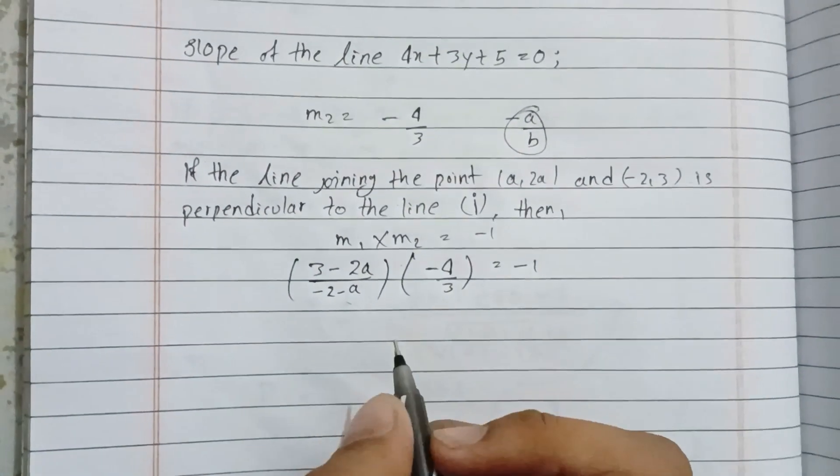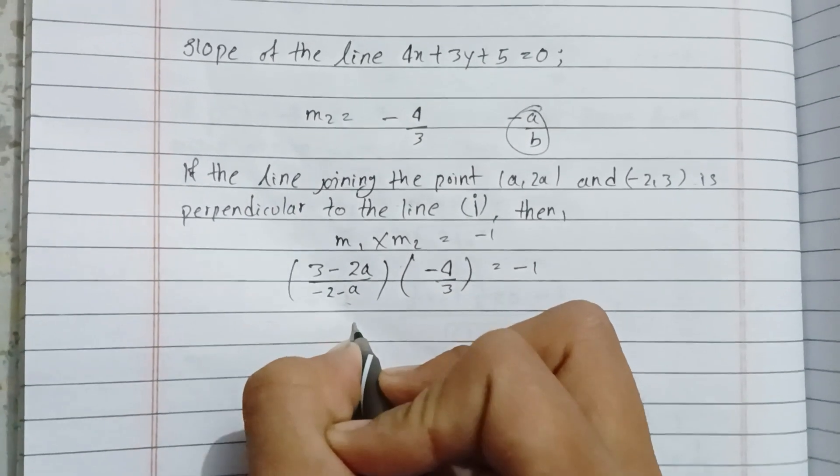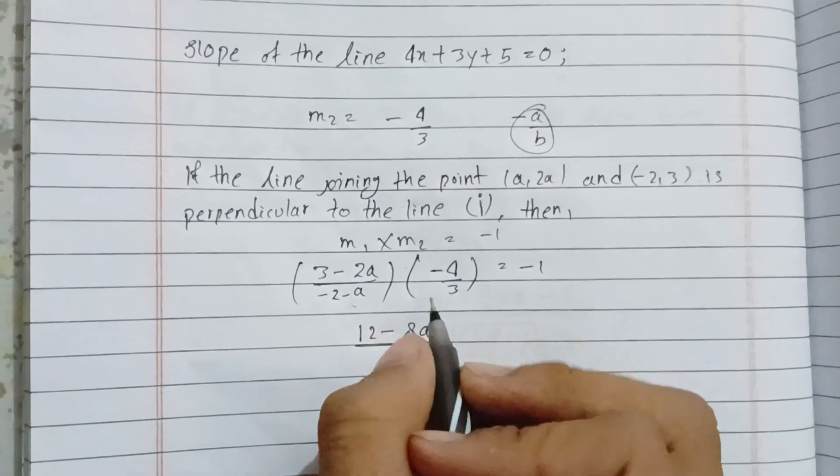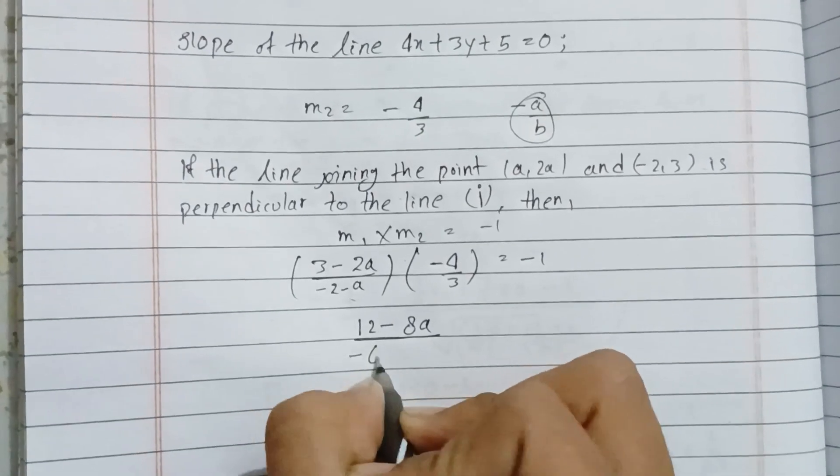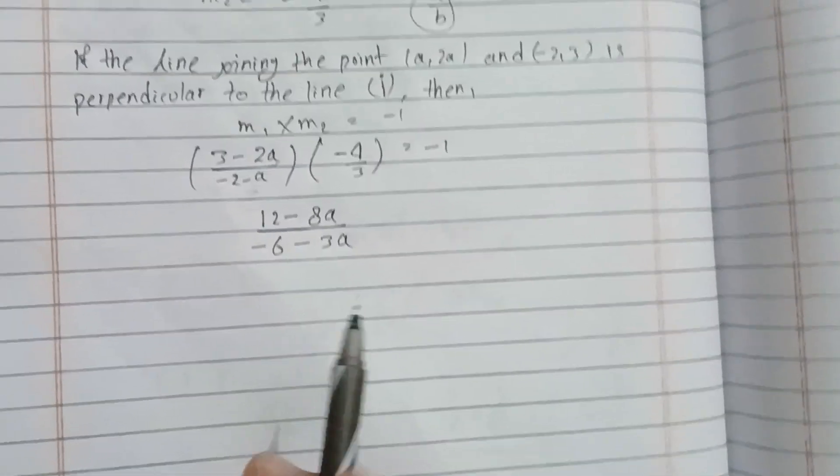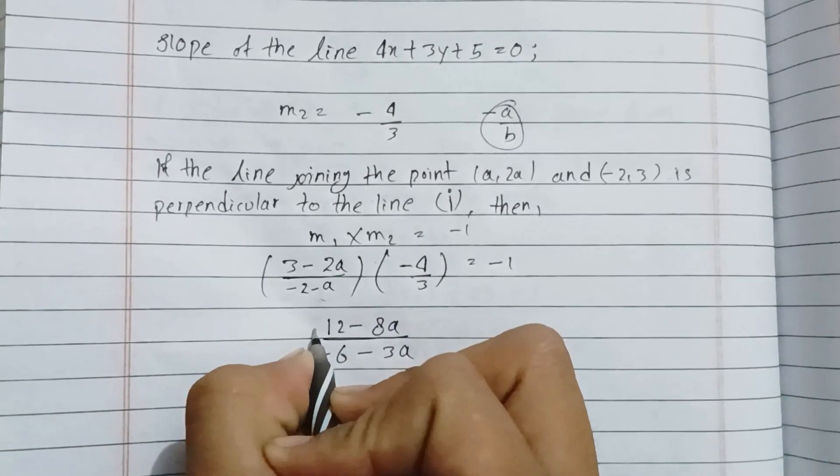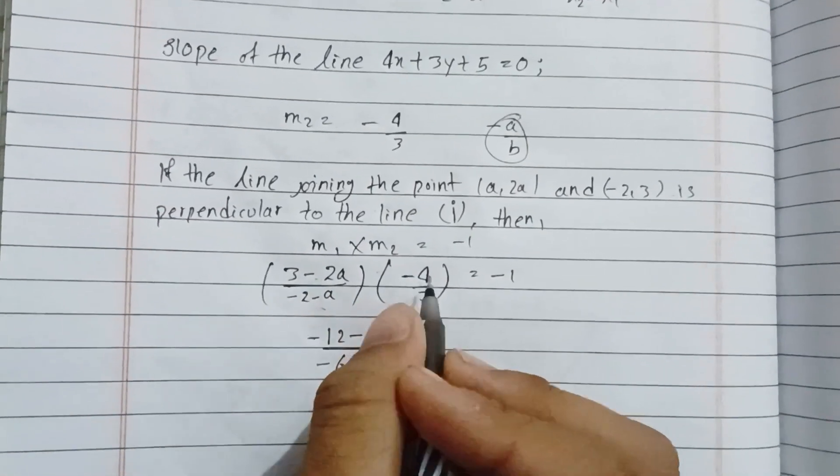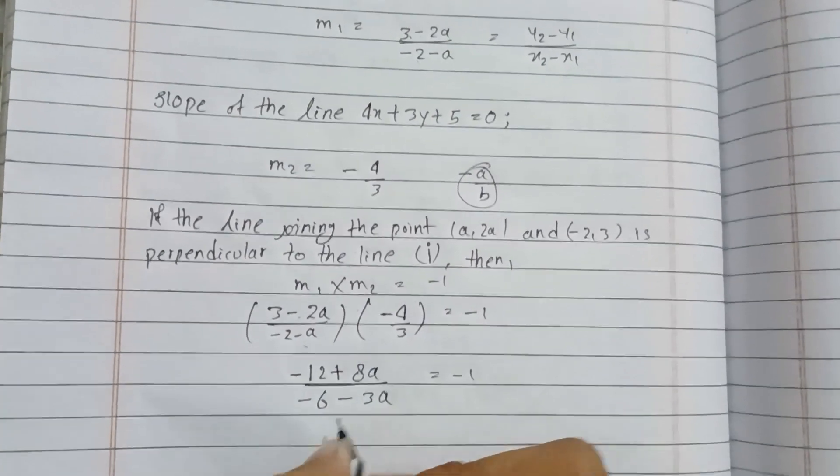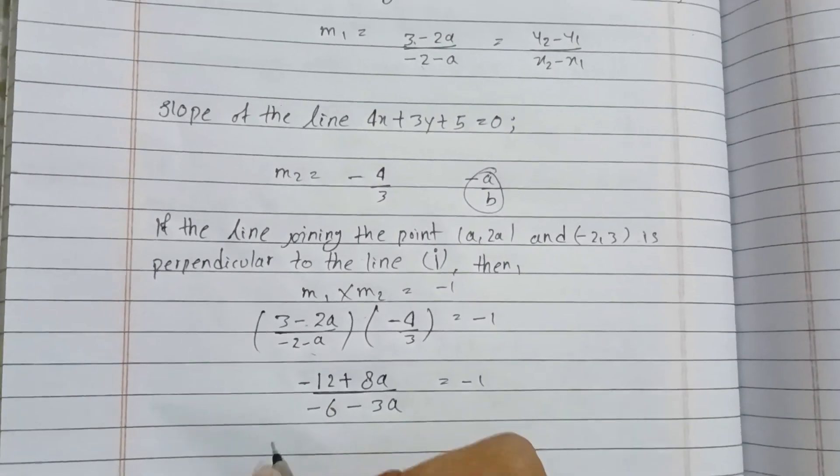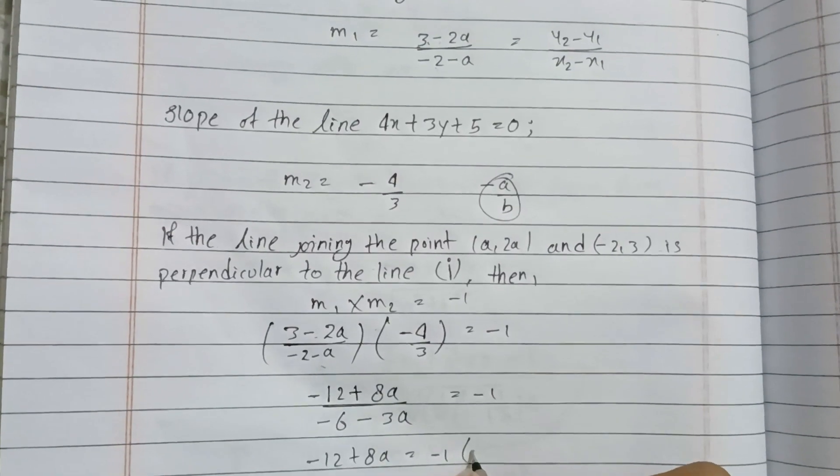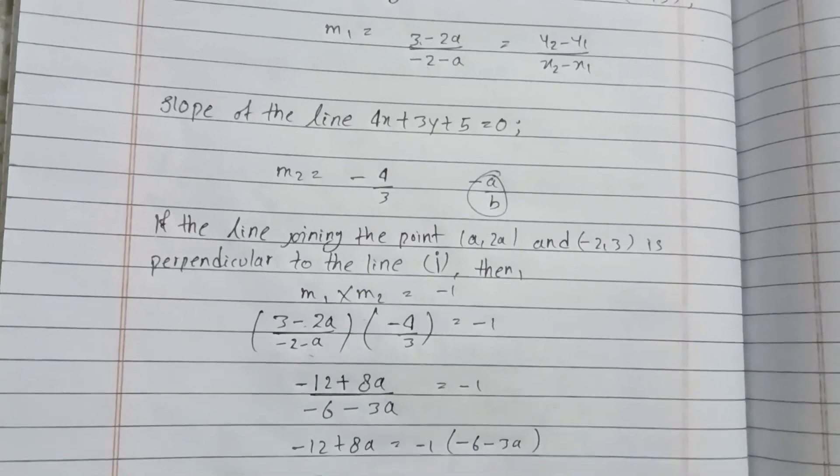We have (3 - 2a) over (-2 - a) times (-4/3) equals -1. Simplifying: minus times minus gives plus, so -12 + 8a over (-6 - 3a) equals -1. This becomes -12 + 8a equals -1 times (-6 - 3a), which is 6 + 3a.